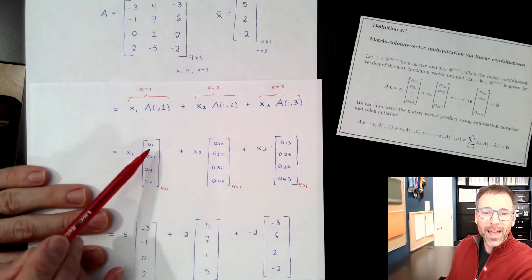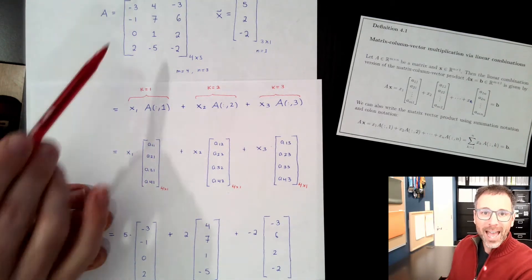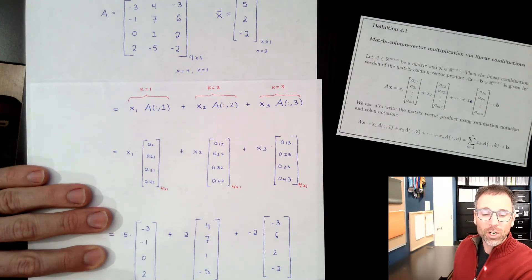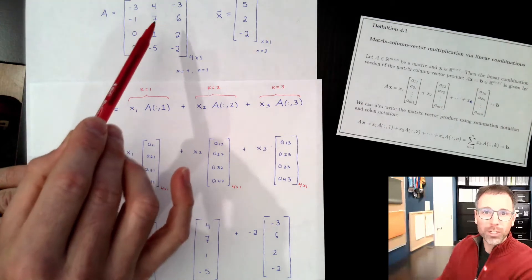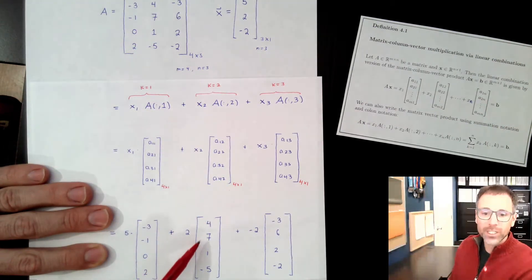So check this out. Column 1, A11 is negative 3, A21 is negative 1, A31 is 0, A41 is 2. Same thing over here. We've got 4, 7, 1, negative 5, 4, 7, 1, negative 5.